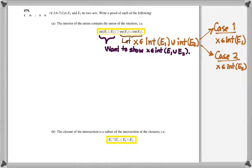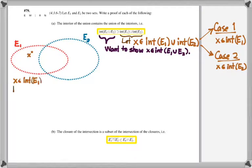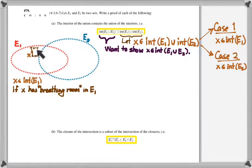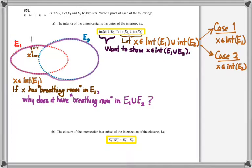So you can say 'without loss of generality, assume X belongs to E1; the argument is parallel for E2.' In case one, X is an interior point of E1, meaning by definition there exists a positive real number C such that the open interval (X minus C, X plus C) is a subset of E1. We then need to show X has breathing room inside the union of E1 and E2. The picture gives away why this argument is not intricate — it follows directly from how we define the union of two sets.